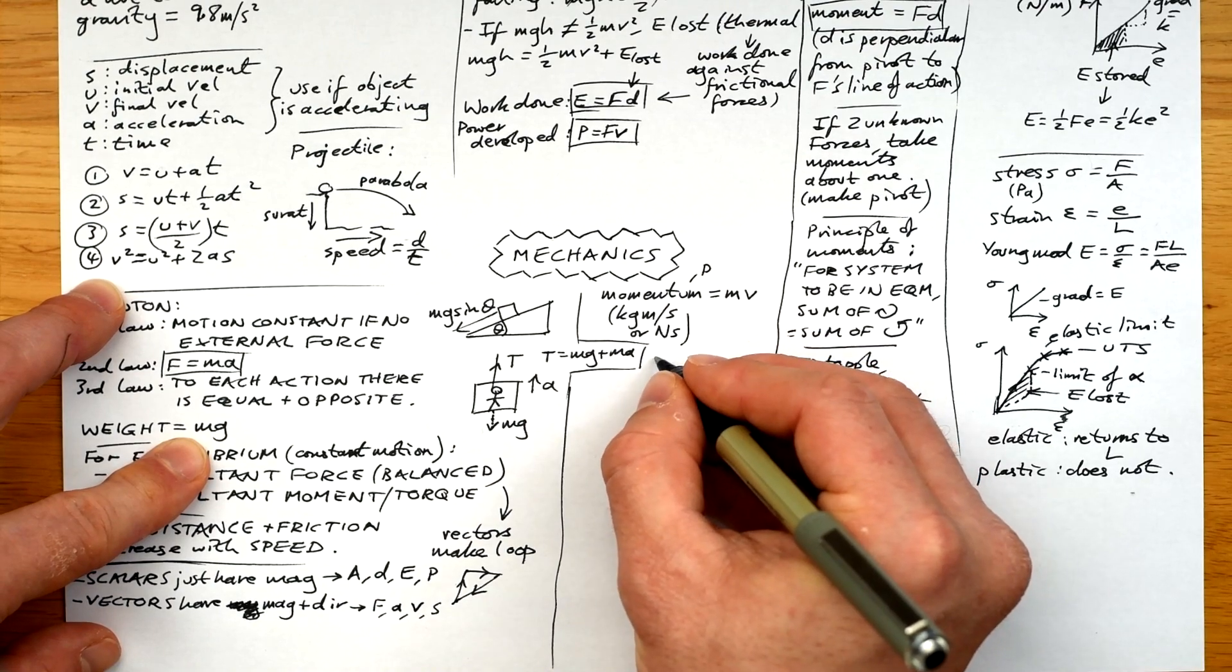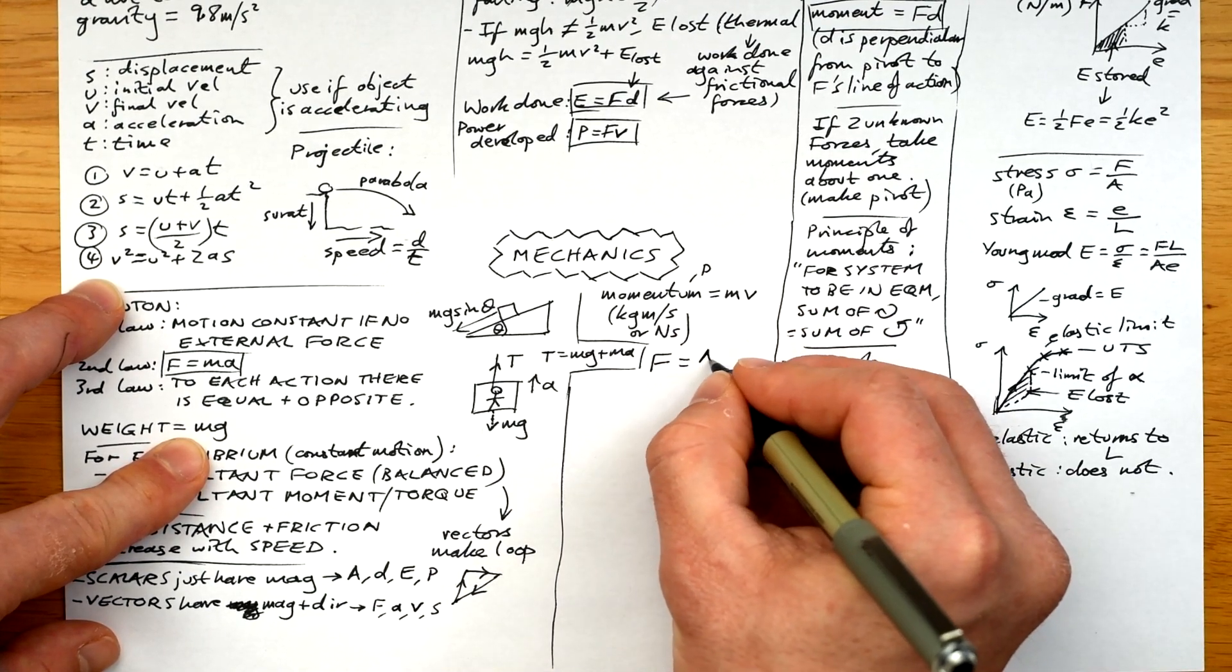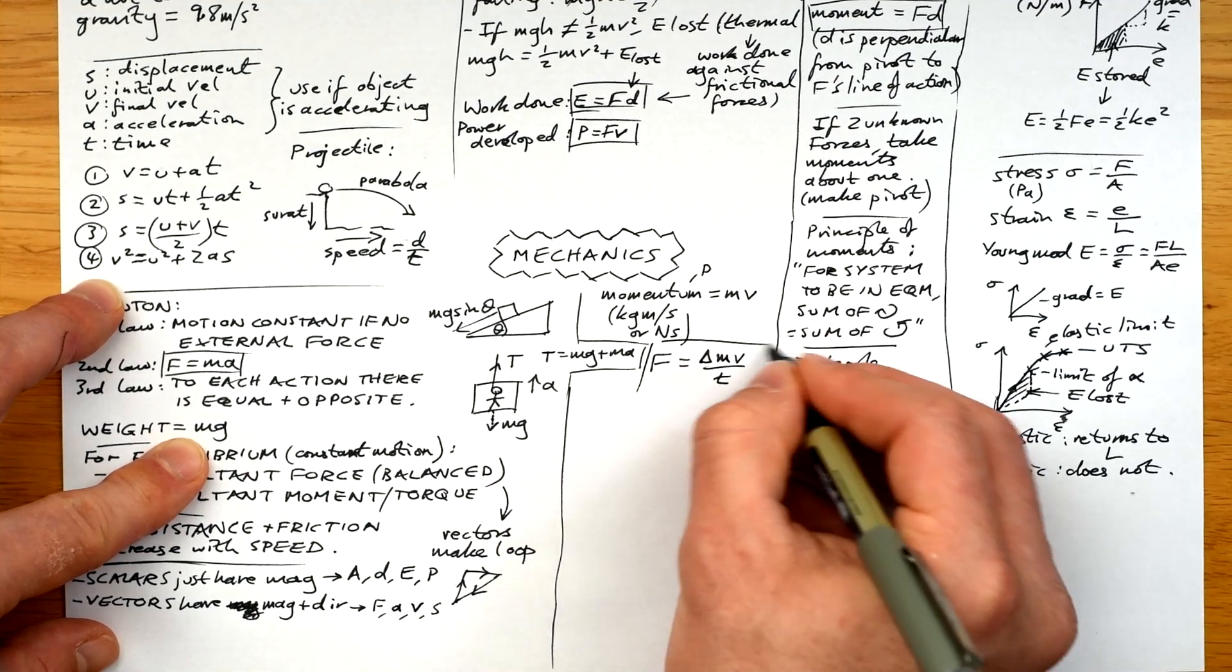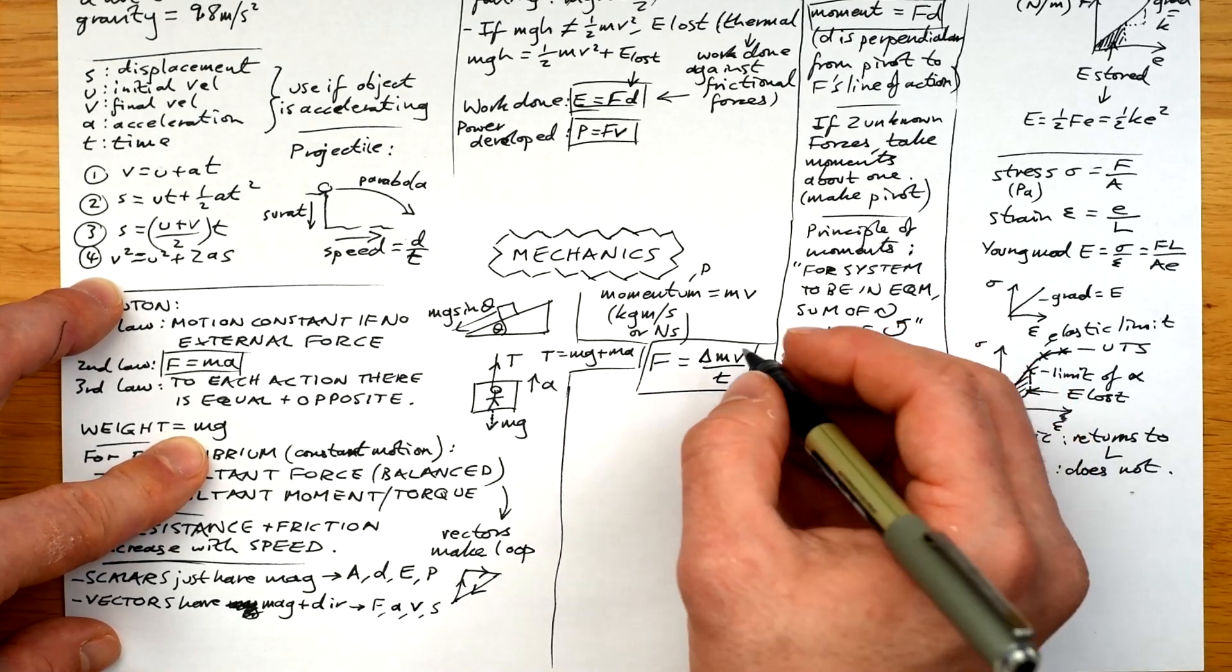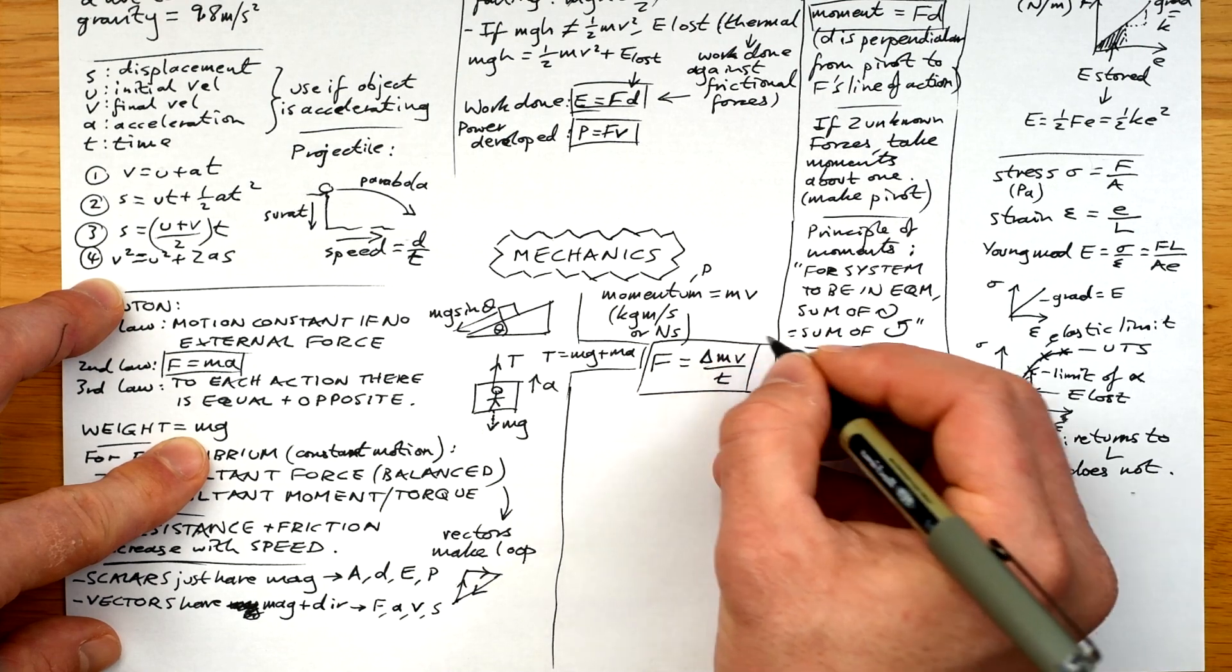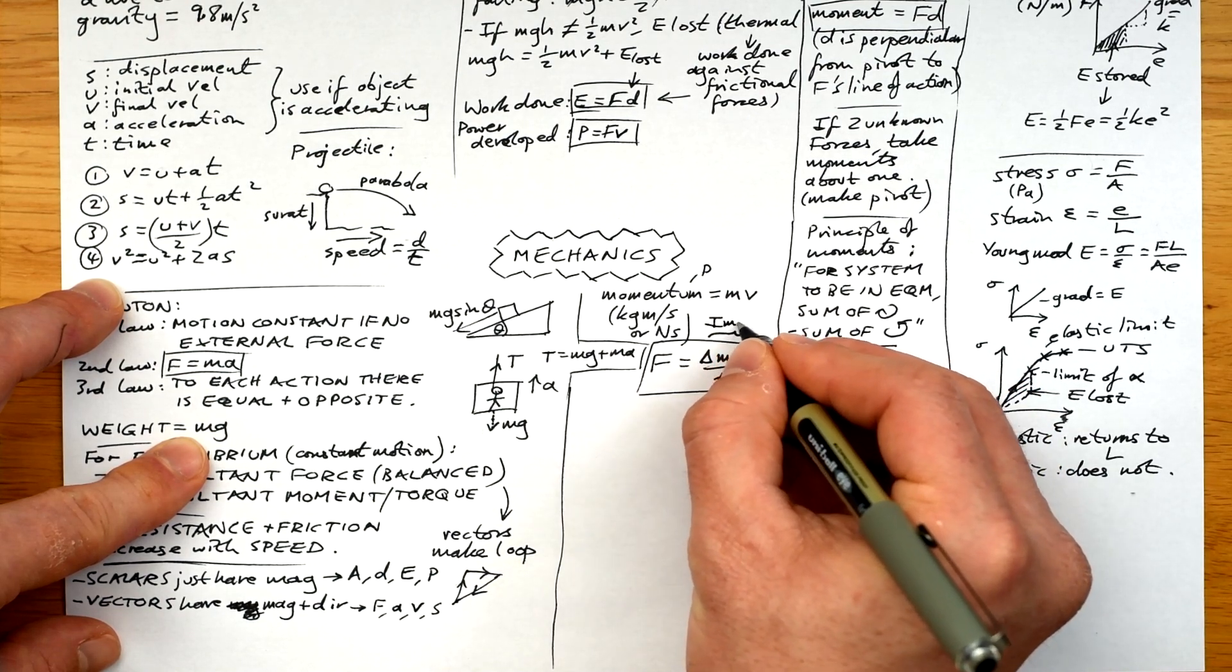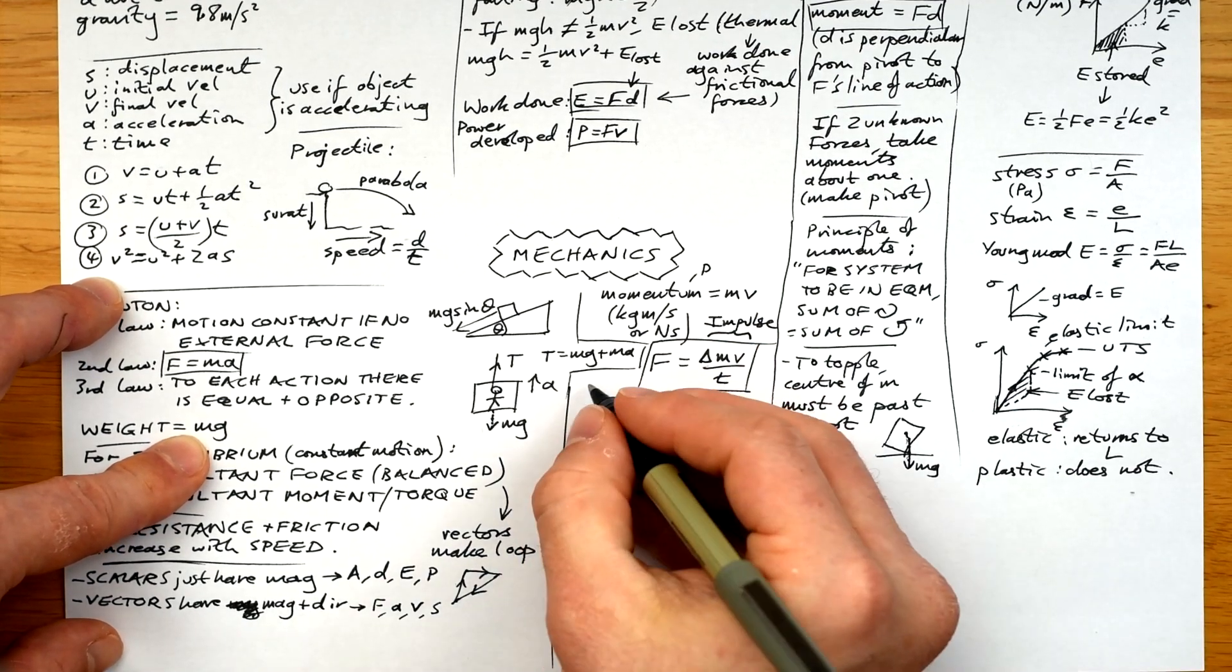Momentum is equal to mv. So that means the unit is kilogram meters per second or newton seconds. How does it link to force? Well, force is equal to delta mv, that's change in momentum divided by time. In word form, force is equal to the rate of change of momentum. This is the equation that shows that the longer a collision takes, the less the force felt. And that's how crumple zones and airbags work. They increase the collision time.